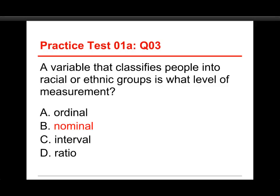Examples of nominal variables include sex, gender, college major, and state of birth — these are just different for each person. A racial or ethnic group is a nominal variable, also called a categorical variable. Nominal and ordinal together make categorical variables, a term I'll often use in videos and in class.